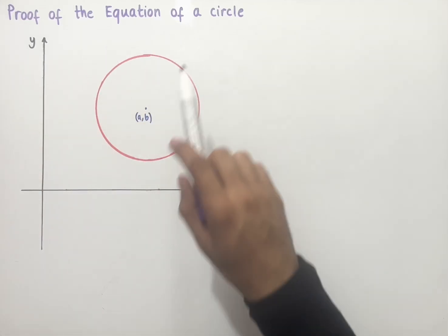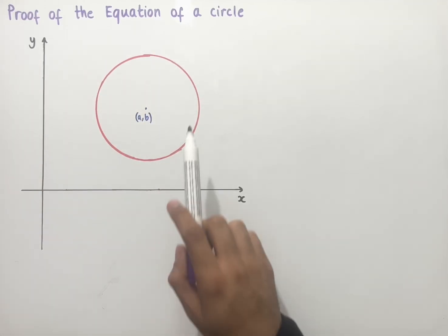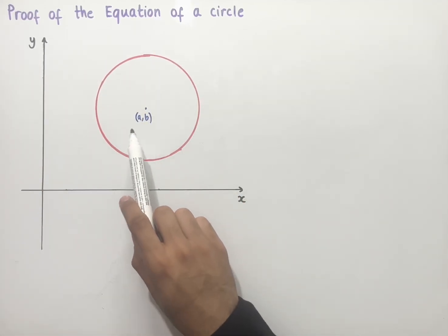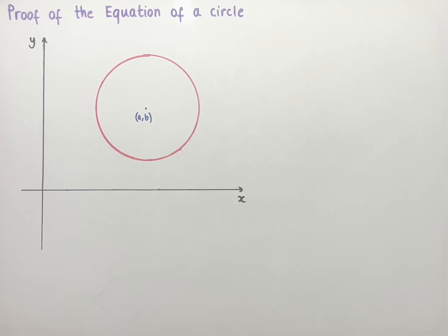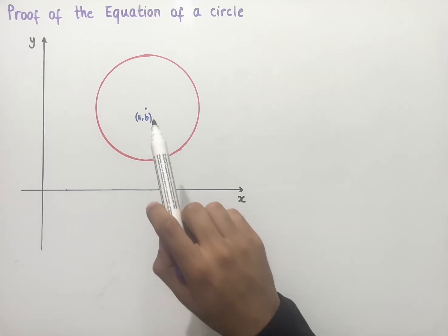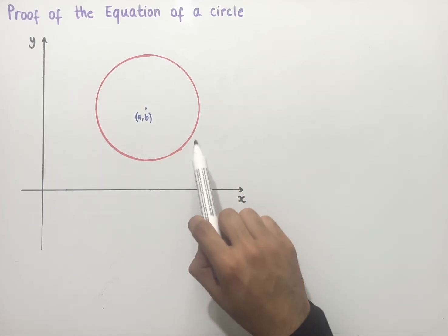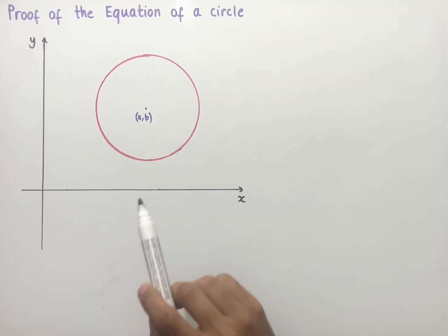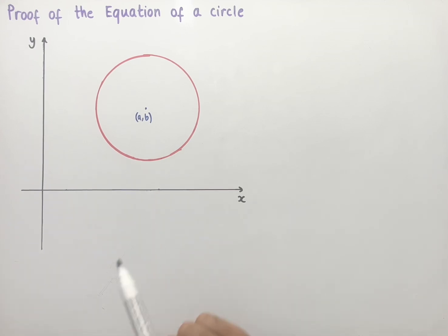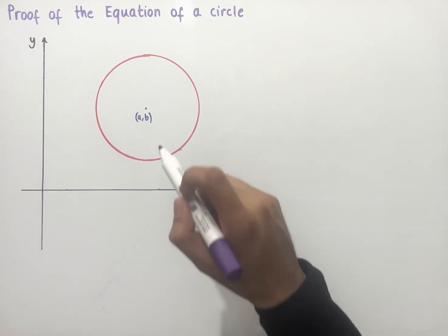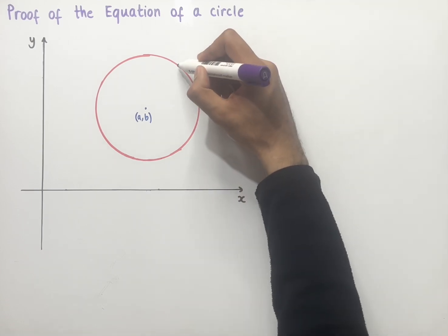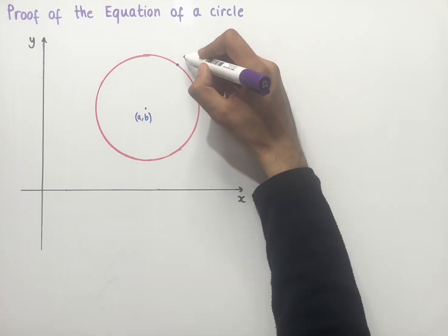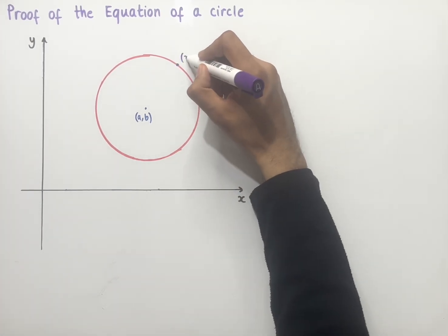Let's look at the proof of the equation of a circle. We have a circle here centered at A, B and we're going to think about how we can generalize the equation of any circle using this as an example. If we first consider any point on the circumference of a circle, it must have an x coordinate and a y coordinate. We'll choose any point on the circumference, say up here, and give this point coordinates x and y.